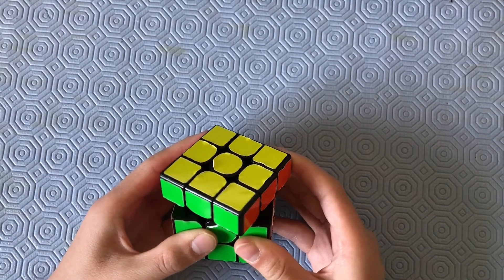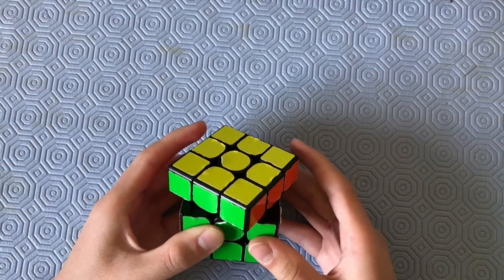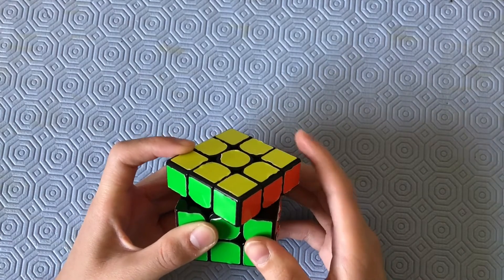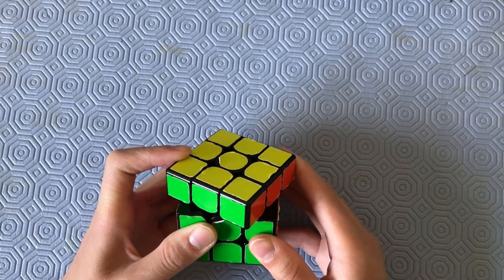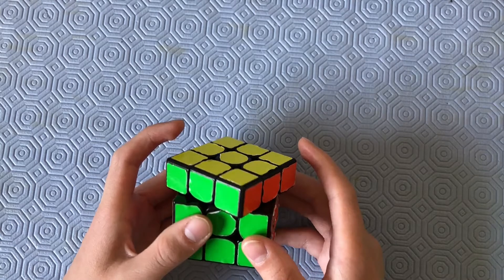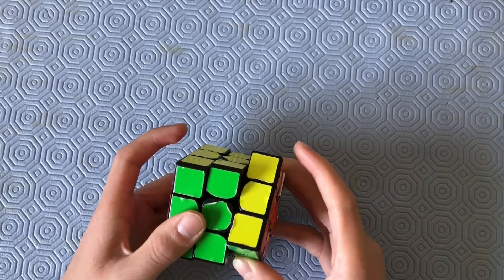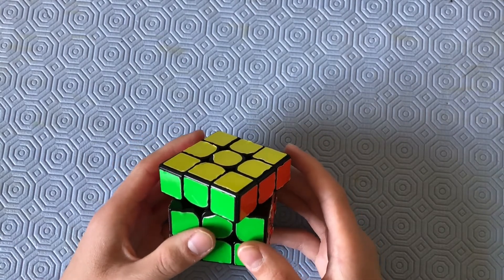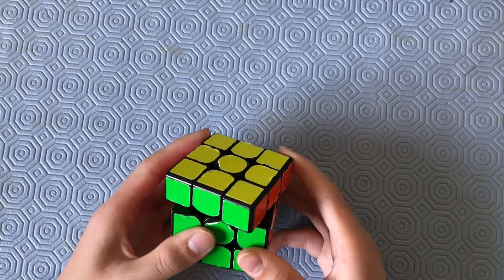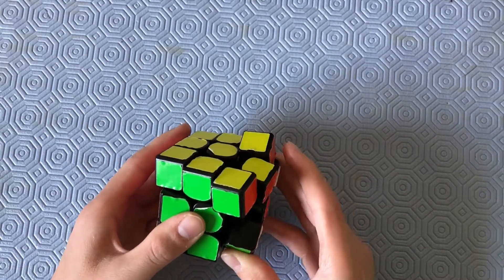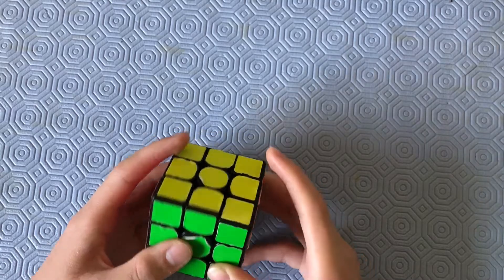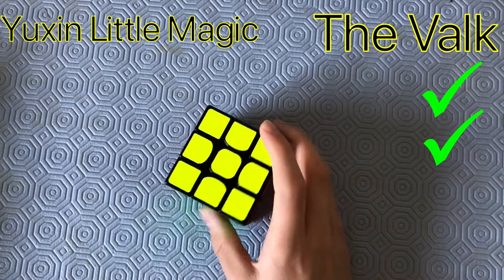Now, for reverse corner cutting, can it cut one line? No, it can't. It wants to go to normal corner cutting instead of reverse corner cutting. But can it cut close to the line? Yes, it can. With ease. So, that's about as close as the Yushin Little Magic can cut. If I had to give the corner cutting to one cube, I would give it to the Valk.